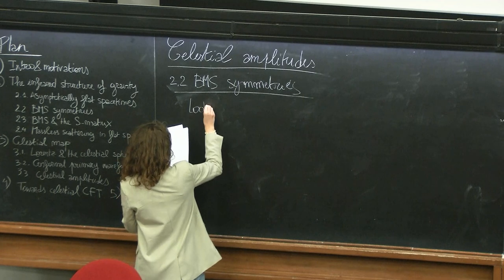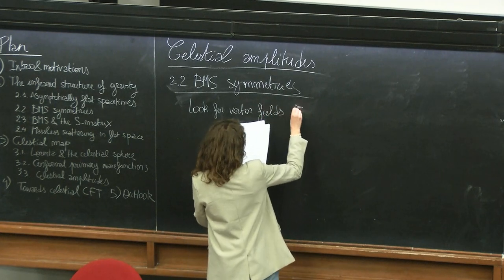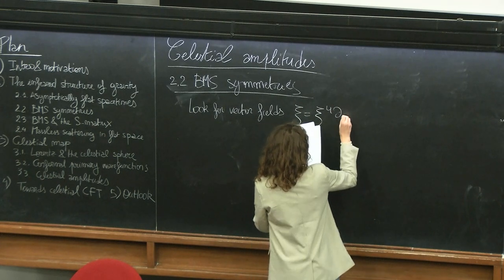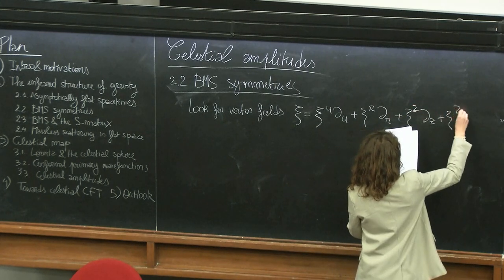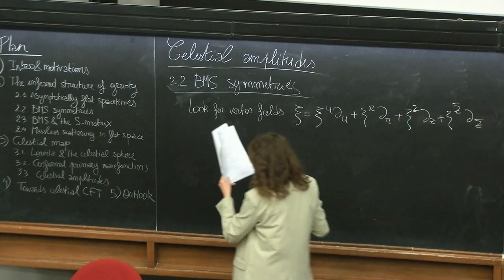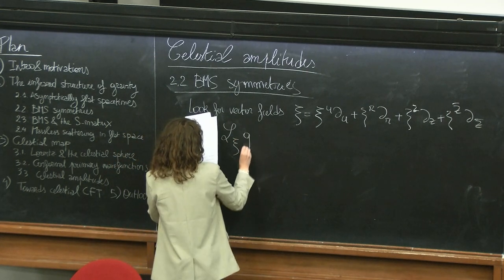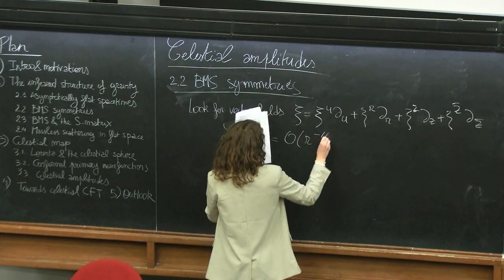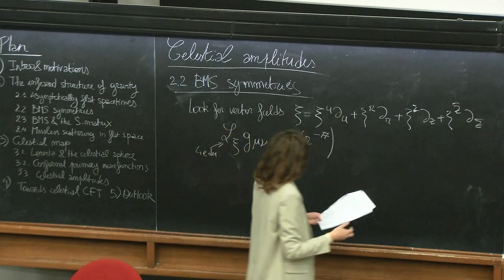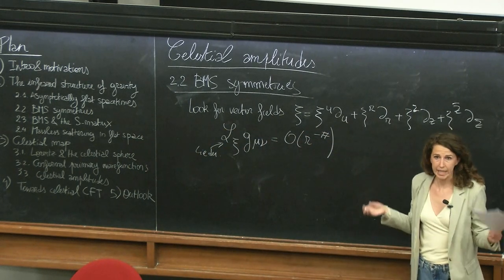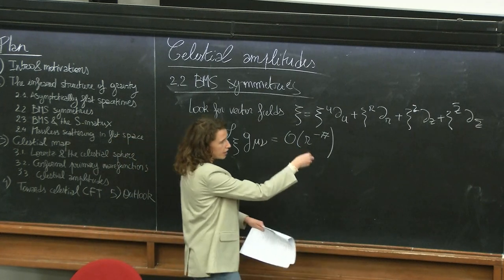We will look for infinitesimal vector fields which preserve the asymptotic expansion. This means we compute the Lie derivative of the metric along these vector fields and ask it not to be exactly zero — that would be a Killing vector. We want something that preserves the asymptotic structure. The two rules of the game: we want to preserve the fall-off conditions and the gauge fixing.